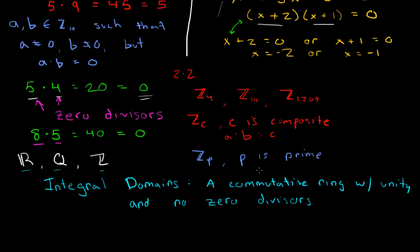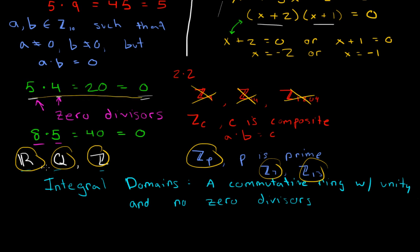So examples would be, you know, Z7, that's an integral domain. You know, Z13, that's an integral domain. So all of these here, all of these here that I've listed, these are all integral domains. These ones are not, they have zero divisors. The ones down here do not have zero divisors. So this kind of situation could never happen in any of these.